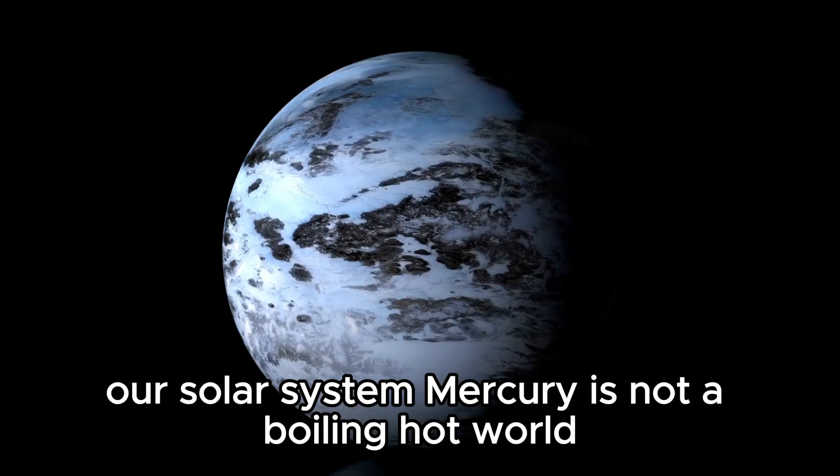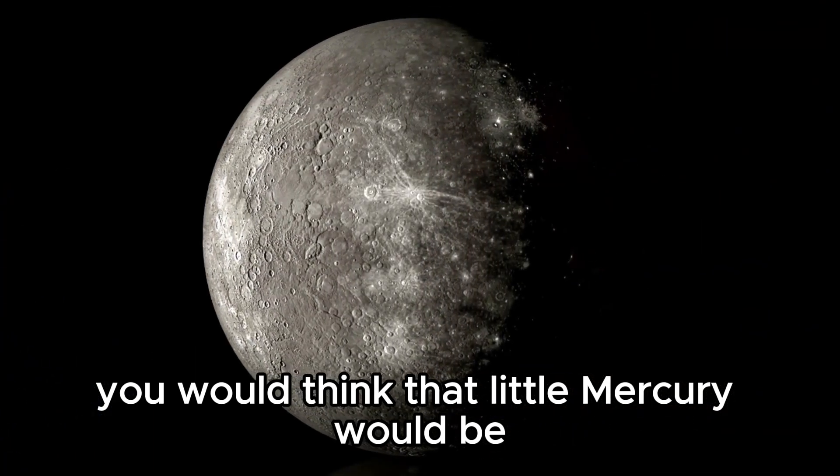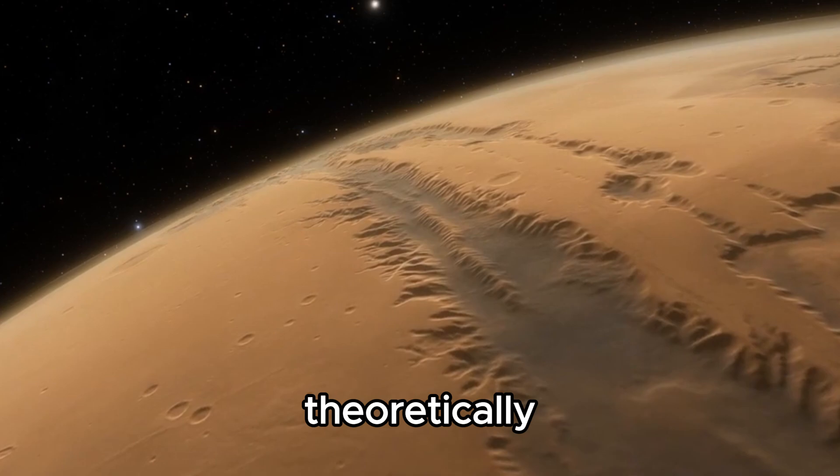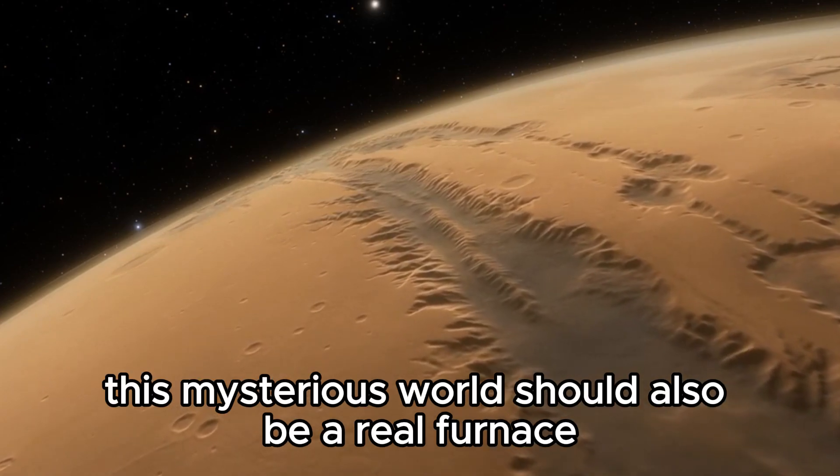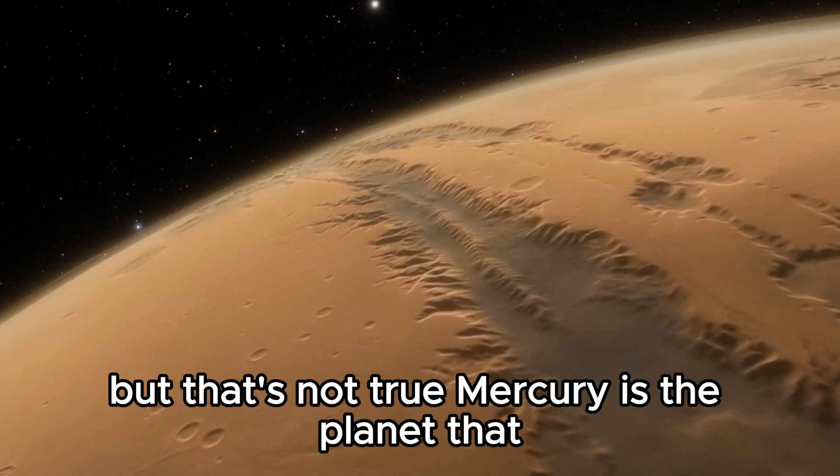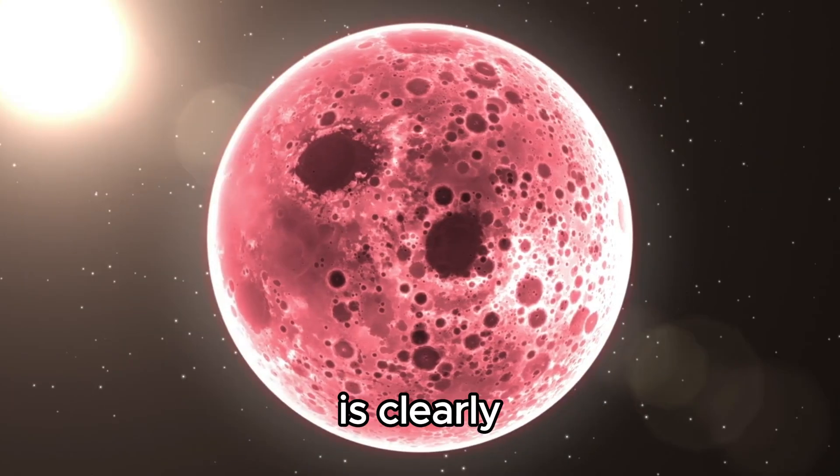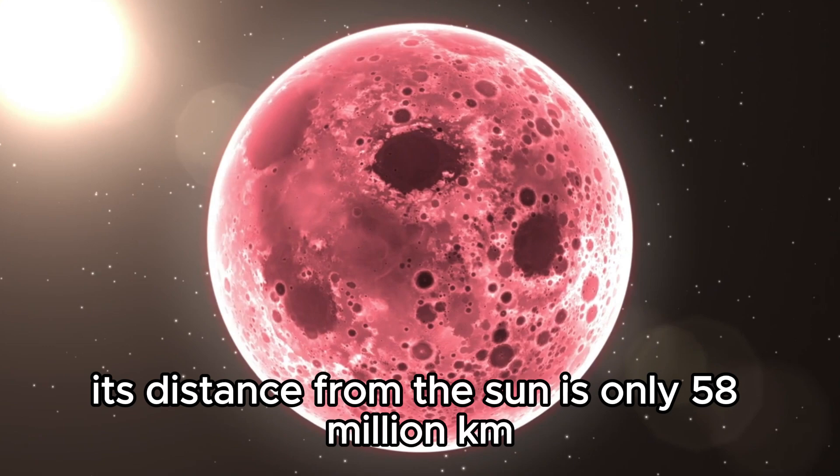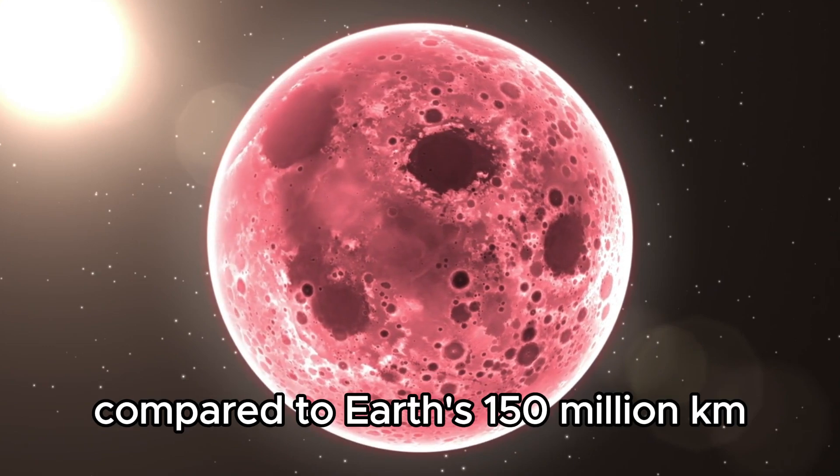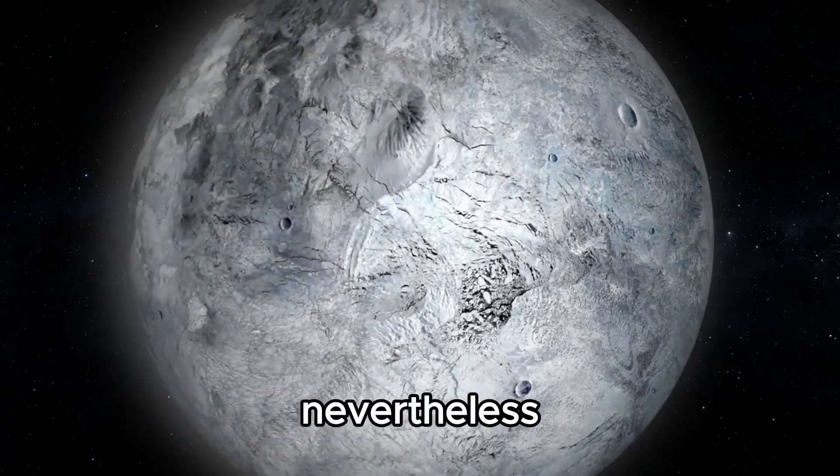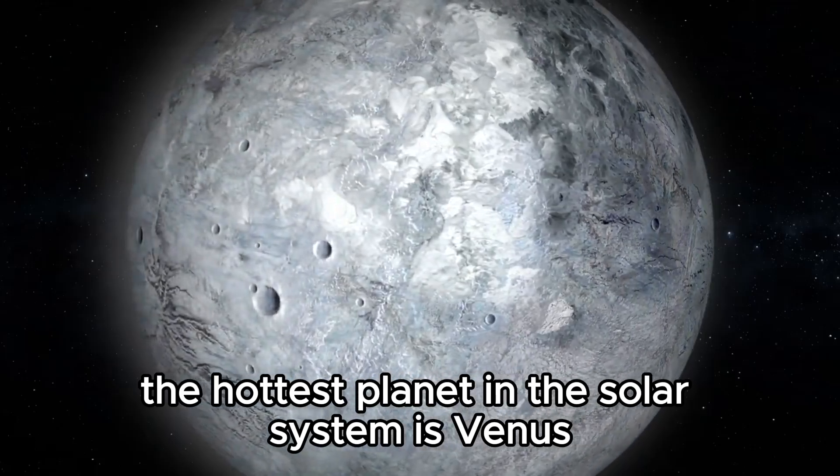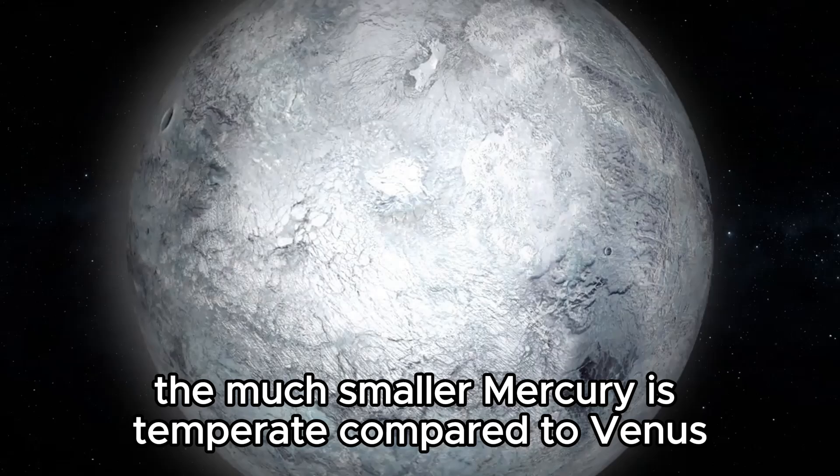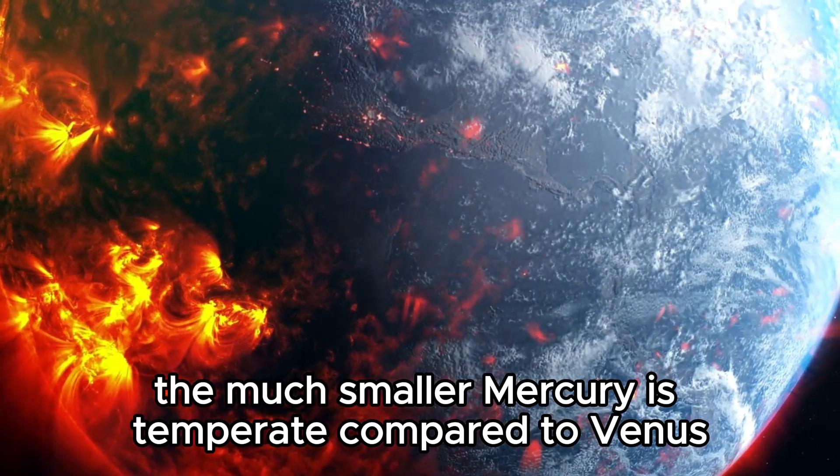Mercury is not a boiling hot world, you would think that little Mercury would be the hottest planet in the solar system. Theoretically, this mysterious world should also be a real furnace, but that's not true. Mercury is the planet that is clearly closest to the Sun at only 58 million kilometers compared to Earth's 150 million kilometers. Nevertheless, the hottest planet is Venus, and Mercury is temperate compared to Venus.